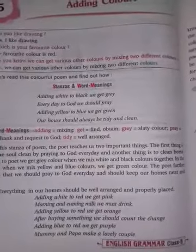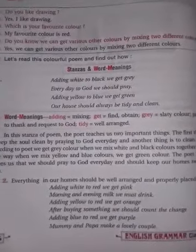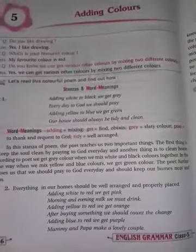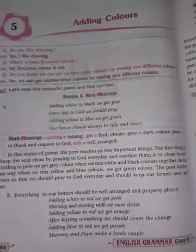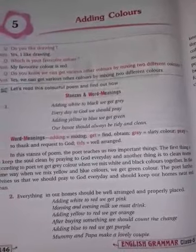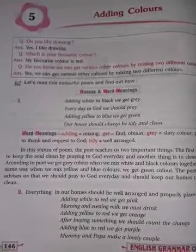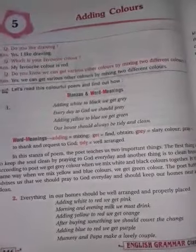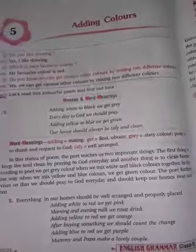Adding white to red — जब हम white और red color को mix करेंगे तो pink color बनेगा। Morning and evening milk we must drink — हमें सुबह और शाम दूध पीना चाहिए। Adding yellow to red — जब हम yellow और red color mix करेंगे तो orange color प्राप्त होगा। After buying something we should count the change — जब भी हम कोई वस्तु खरीदते हैं तो हमें बदले के पैसे गिनने चाहिए। Adding blue to red we get purple — blue और red को add करने पर purple color बनता है। Mummy and papa make a lovely couple — mummy और papa एक बच्चे के लिए अच्छे couple कहलाते हैं।